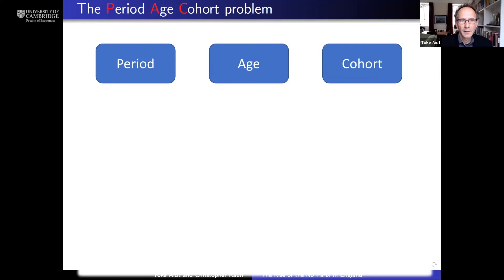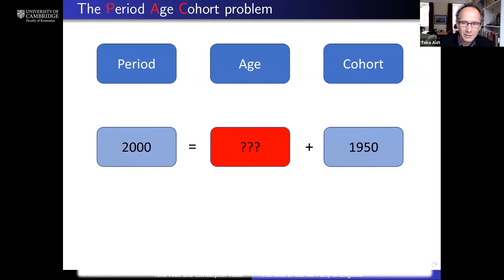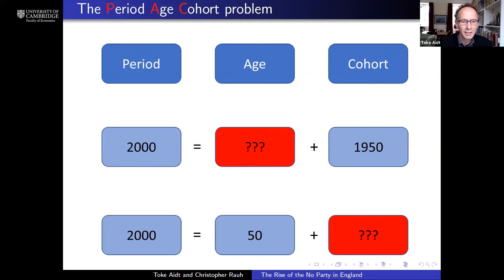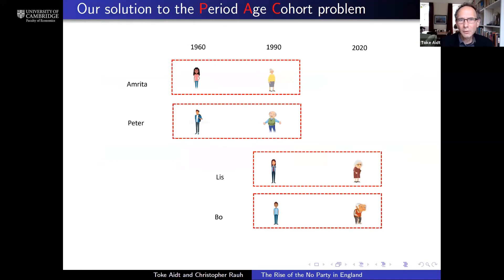A third possibility is a secular trend — the type of change that happens in the political behavior of everybody at a given point in time because they are exposed to the same experiences. We would like to know which of these it is, or what combination explains the rise of the no party. It turns out this is harder than it might seem, because period, age, and cohort effects are linearly dependent. If the year is 2000 and an individual was born in 1950, it doesn't take a PhD in mathematics to work out that person must be 50 years of age.